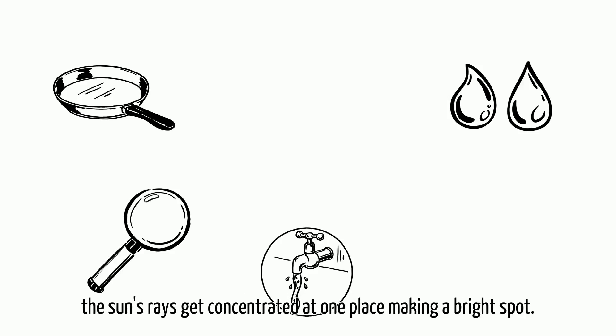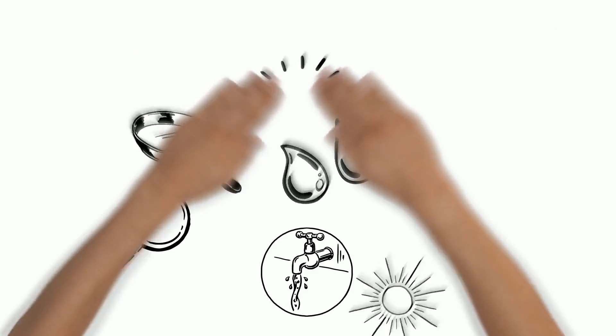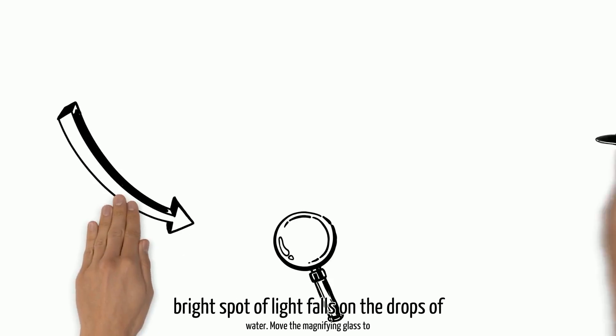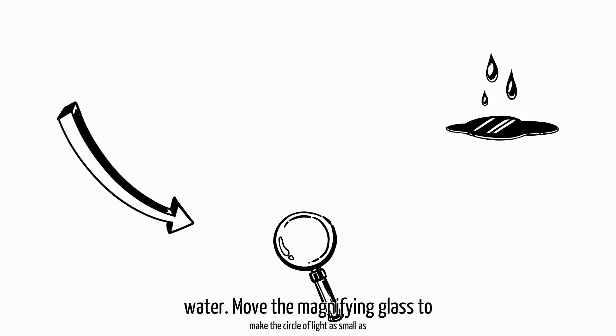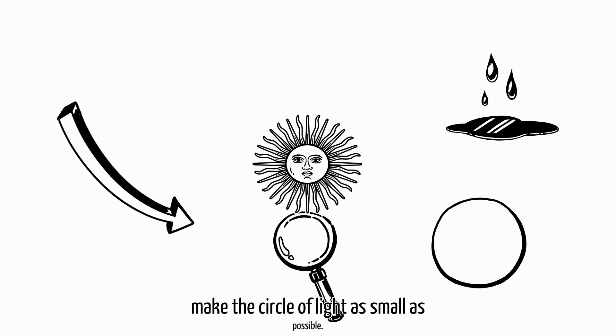Hold your magnifying glass so that the sun's rays get concentrated at one place making a bright spot. Move the magnifying glass so that the bright spot of light falls on the drops of water. Move the magnifying glass to make the circle of light as small as possible.